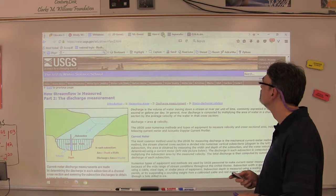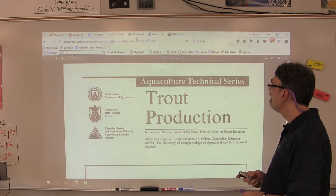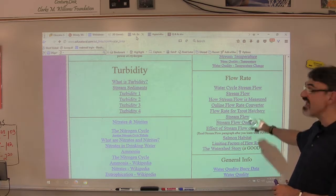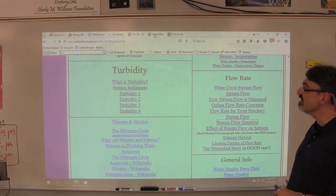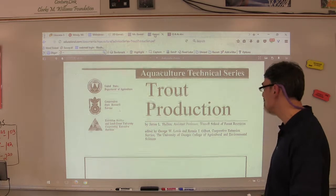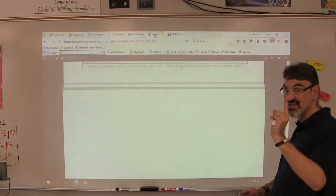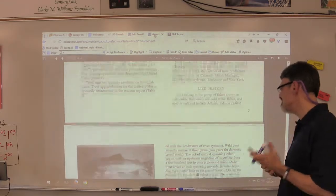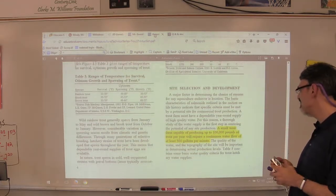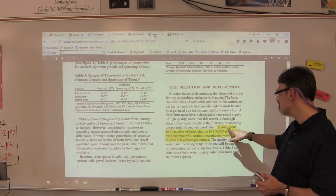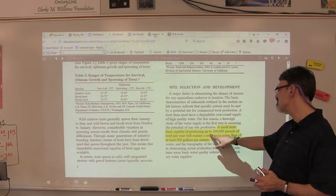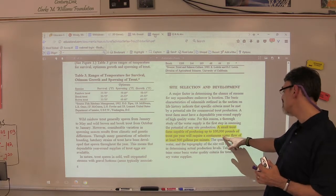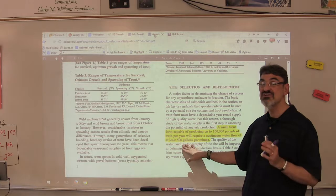This one is flow rate for a trout hatchery. It's a huge document with a lot of information, but I highlighted some parts to give you reference. A small trout farm capable of producing up to 100,000 pounds of trout per year will require a continuous water flow of at least 500 gallons per minute.